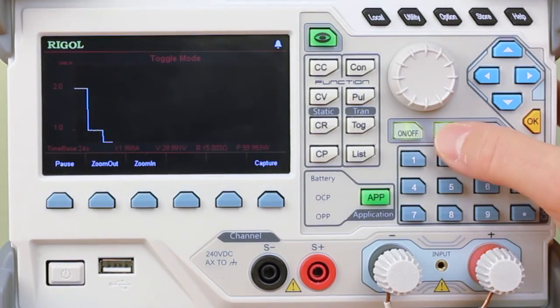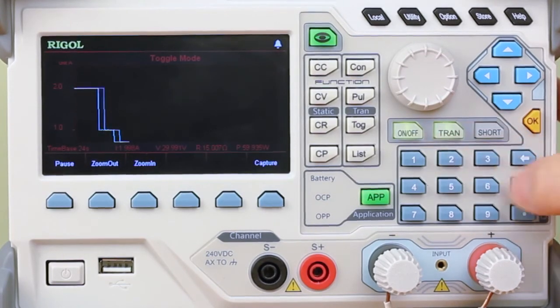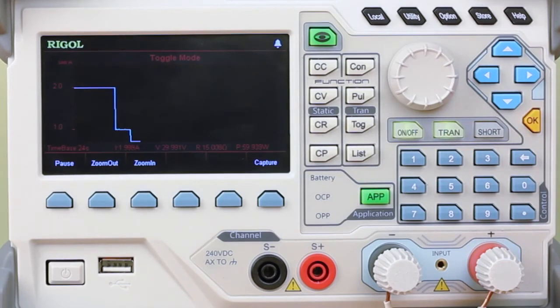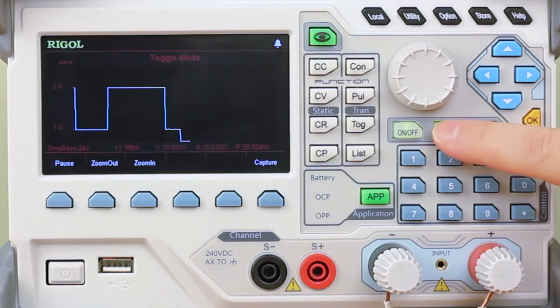Once we turn this on, we see that it holds level until I hit the trigger button again. So using the transition button to trigger this, I can trigger it as quickly or slowly as I wish.